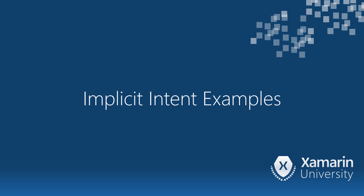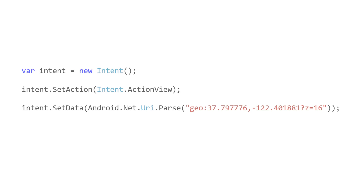Use an implicit intent with ActionView to show a location on a map. To show a location on a map you need to create the intent with action and data. The action is ActionView because you're showing information to the user. The data is the map location you want to show.